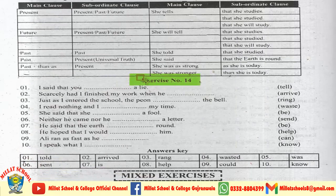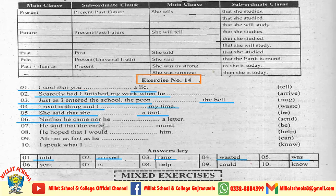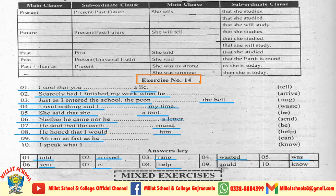Now move on to verb correction exercise number 14. Sentence 1: I said that you told a lie. Sentence 2: Scarcely had I finished my work when he arrived. Sentence 3: Just as I entered the school, the piano rang the bell. Sentence 4: I read nothing and I wasted my time. Sentence 5: She said that she was a fool. Sentence 6: Neither he came nor he sent a letter. Sentence 7: He said that the earth is round. Sentence 8: He hoped that I would help him. Sentence 9: Ali ran as fast as he could. Sentence 10: I speak when I know.